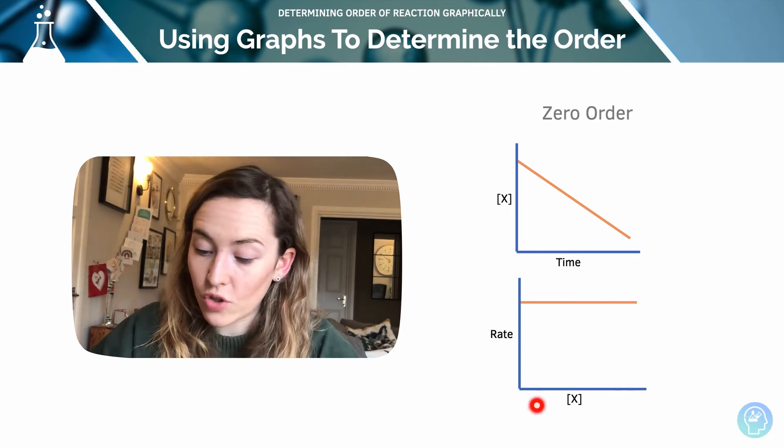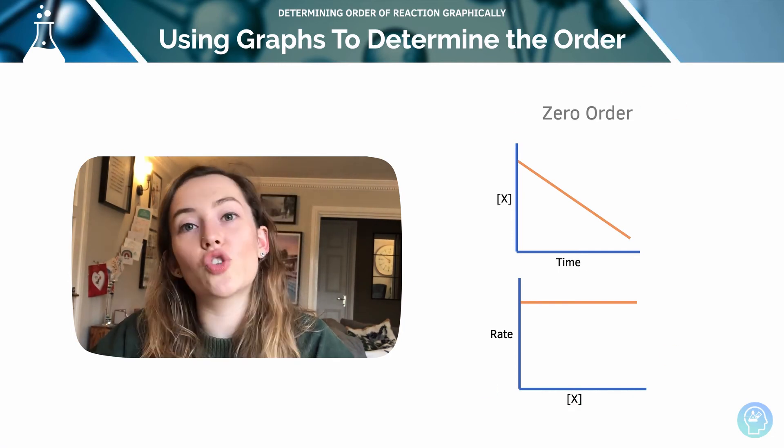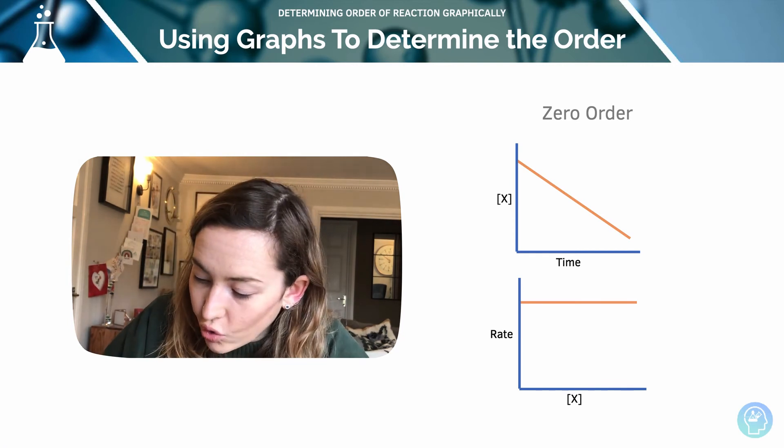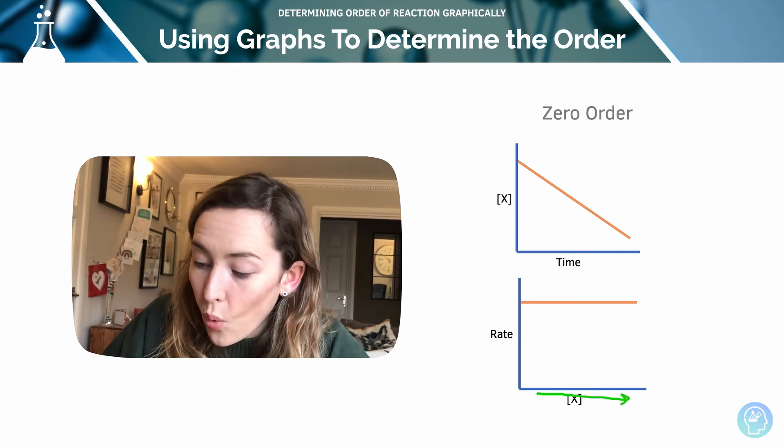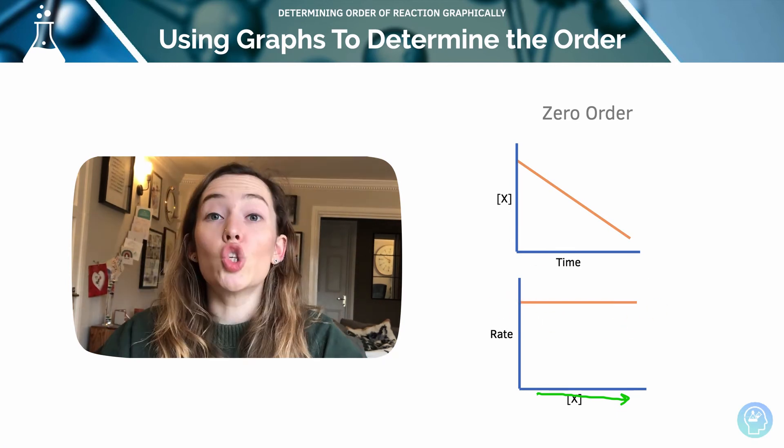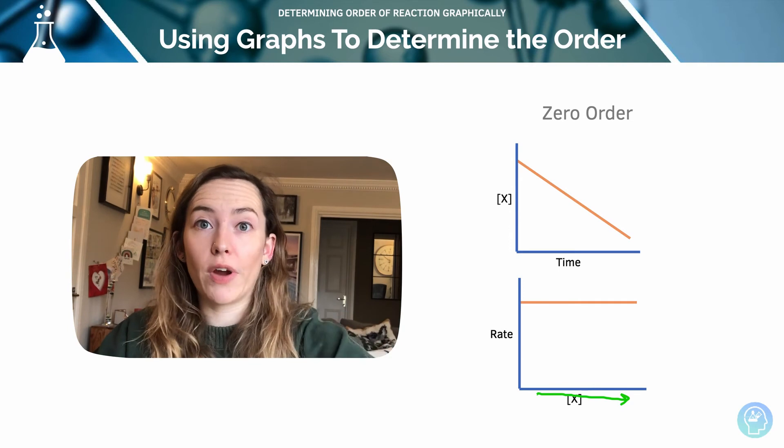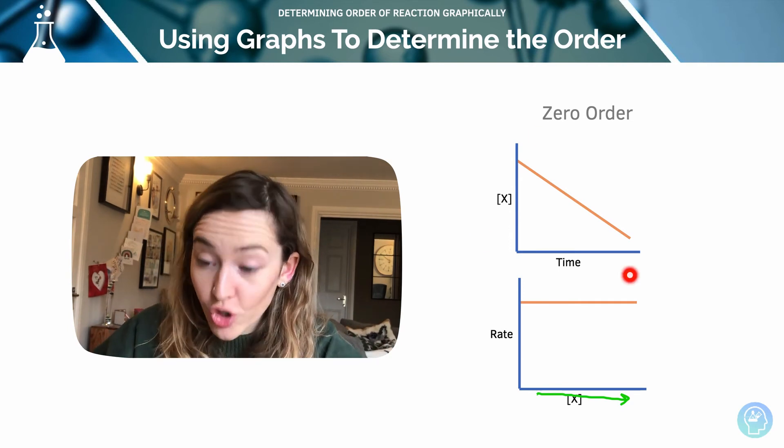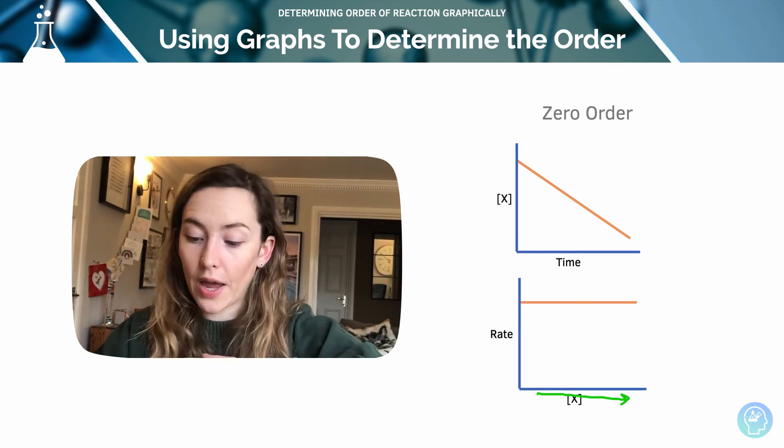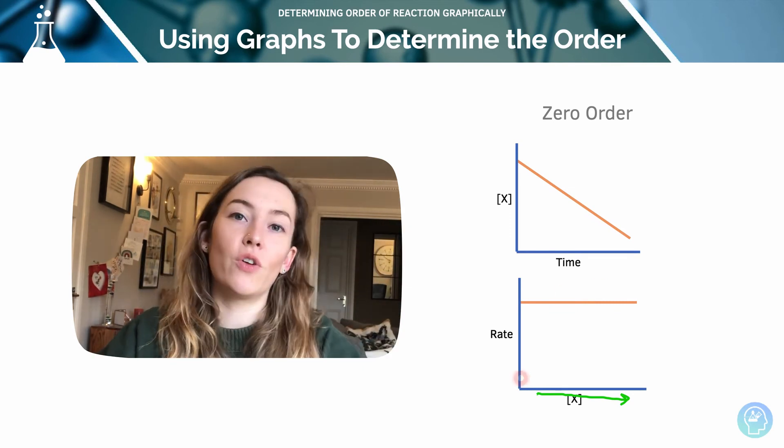So here is a zero order rate versus concentration graph. We can see that concentration does not affect the rate. As the concentration increases on the x-axis, we get no change. The value for rate is exactly the same. So we're looking for a completely straight line in our concentration versus time graph, and then we're looking for a horizontal line in our rate versus concentration graph.